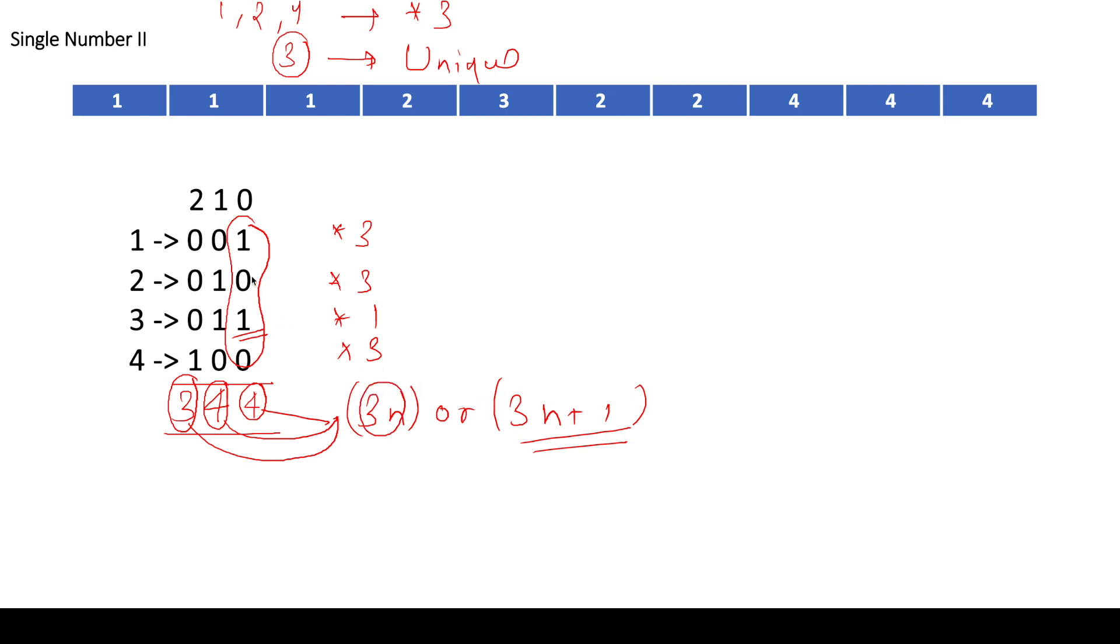So in case the particular bit is set in the unique number, we are getting it in the format of 3n plus 1. So what do I mean to say is that if I do this thing, then I will be able to know which bit is set in my unique number and which bit is not set in my unique number. So basically, in case the sum is of the format of 3n plus 1, we can say that this ith bit is set in my unique number and in case it is of the format of 3n, I will be able to say that this ith bit is not set in my unique number.